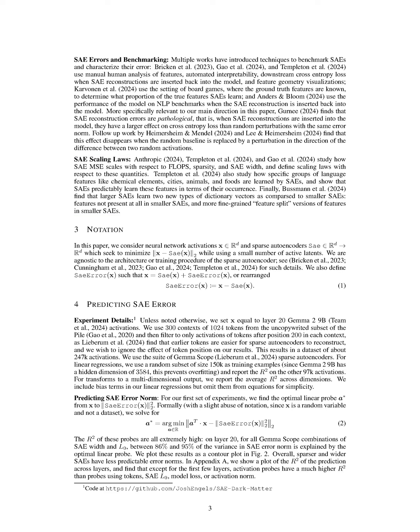Section Summary. In this section, we outline our goal to investigate the predictable nature of sparse autoencoder, SAE, errors in language models, revealing that a significant portion of these errors can be explained through linear transformations of input activations. We also discuss the implications of our findings on the understanding of model activations and the limitations of current SAE approaches, while contrasting our focus with previous work that primarily assessed SAE performance through downstream benchmarks.